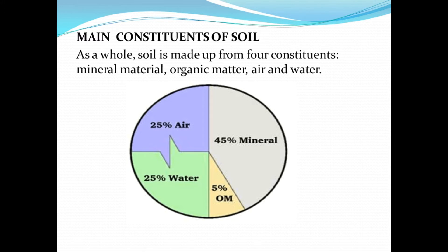However, these can fluctuate depending on where the soil is located. A soil may have more than 25 percent air or more than 25 percent water, and a soil may even lack organic matter. For example, if a soil is found in the desert, it may have an insignificant amount of organic matter. So this diagram is simply representing an ideal soil, but the constituents differ depending on where the soil is found.